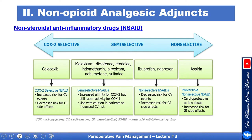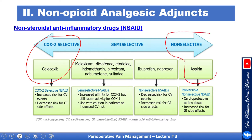NSAIDs can be selective, non-selective, or semi-selective based on how much they tend to block COX-2. Selective drugs include celecoxib. Purely non-selective includes aspirin. In between, you have ibuprofen, naproxen, meloxicam, diclofenac, and others. With selective COX-2 inhibitors, you have more risk of cardiovascular events and less risk of GI side effects. The more non-selective the drug, the more risk of GI side effects.